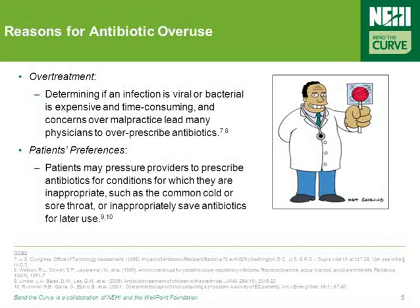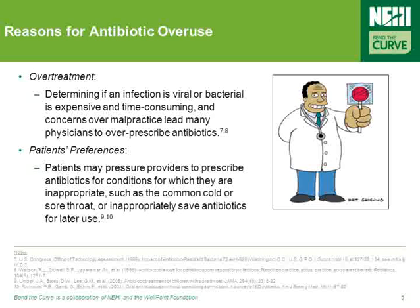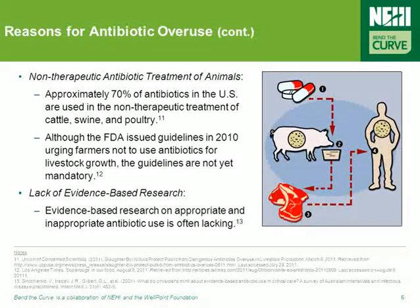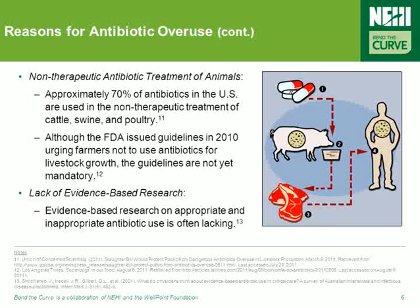The causes of antibiotic overuse are complex and systemic, resulting from overprescribing, patient preferences, the non-therapeutic treatment of animals, and a lack of evidence-based research. For example, doctors concerned over malpractice and sometimes pressured by patients who want them to prescribe antibiotics, even when not appropriate, can also be a driver of antibiotic overuse. About 70% of all the antibiotics used in the United States are used in the non-therapeutic treatment of farm animals and food stocks. In addition, there's a lack of evidence-based research on the appropriate use of antibiotics, and a lot more work needs to be done in this area.